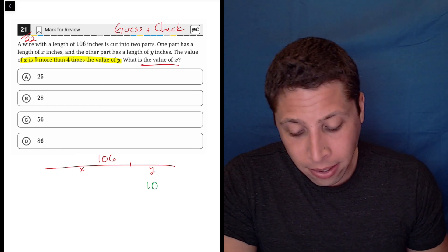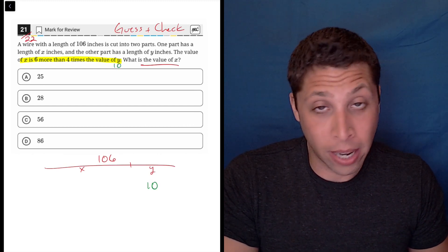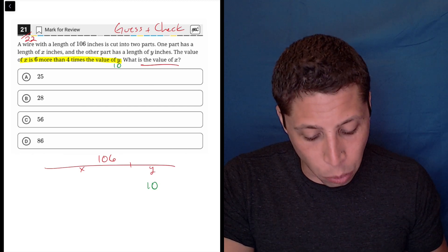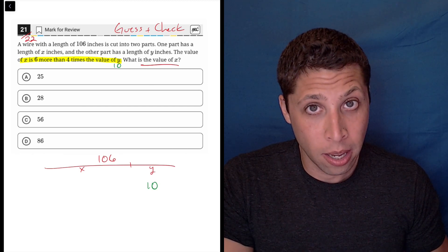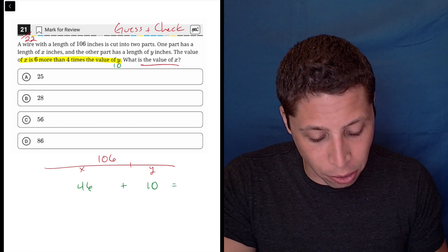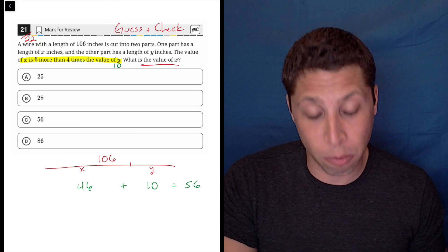Okay. Well, X is six more than four times 10. That's what that sentence says. So six more than four times 10. Well, four times 10 is 40 and six more than that is 46. But obviously if we add these two numbers together, we don't come close to 106. We're at only 56. This is way too small.